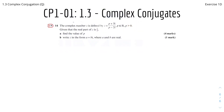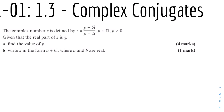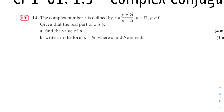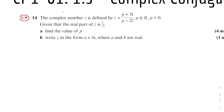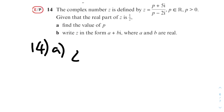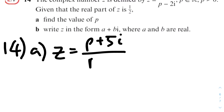Question 14: the complex number z is defined as z = (p + 5i) / (p - 2i), and given that the real part of z is 1/2, find the value of p. We first rationalize this fraction by multiplying top and bottom by the conjugate p + 2i. So (p + 5i)(p + 2i) over (p - 2i)(p + 2i).